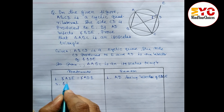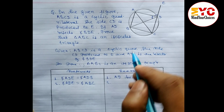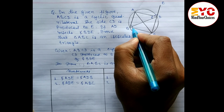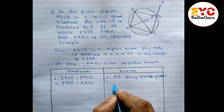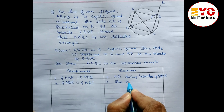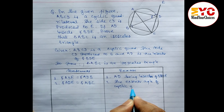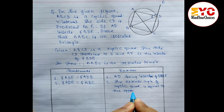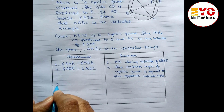Statement 2: angle ADE equals angle ABC. Look at the diagram — angle ADE and angle ABC are equal. Reason: the exterior angle of a cyclic quadrilateral is equal to the opposite interior angle.